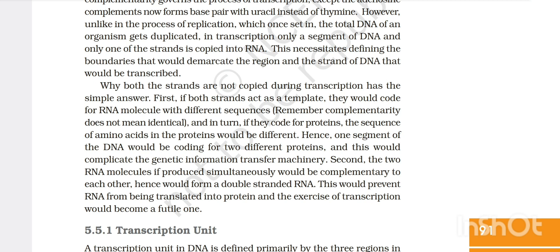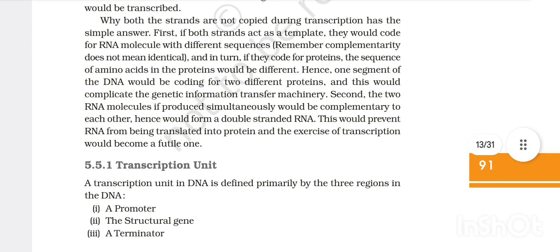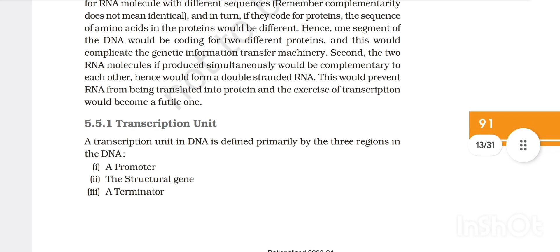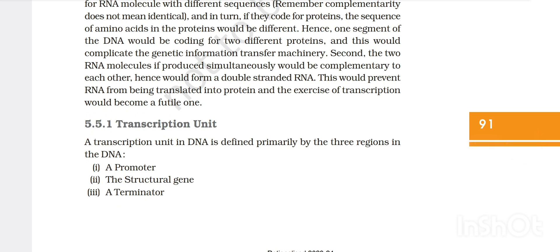Why both strands are not copied during transcription has the simple answer. If both strands act as template they would code for RNA molecules with different sequences, and in turn would code for proteins with different amino acid sequences. Hence one segment of DNA would be coding for two different proteins and this would complicate genetic information transformation. Secondly, the two RNA molecules if produced simultaneously would be complementary to each other, hence would form a double stranded RNA. This would prevent the RNA from being translated into protein and the exercise of transcription would become futile.